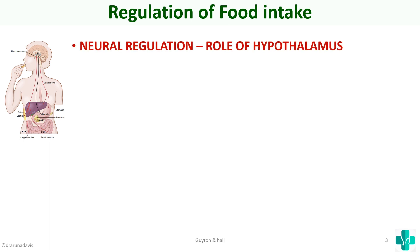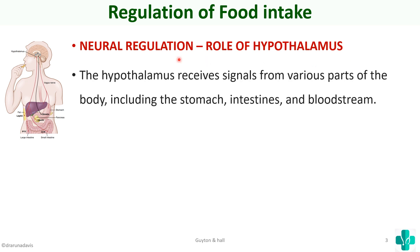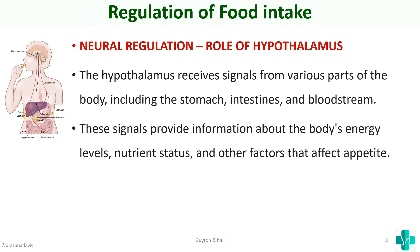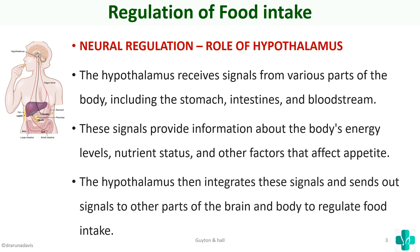The first category is neural factors — how is food intake regulated in the central nervous system? The hypothalamus is the main area which controls food intake. It receives signals from various parts of the body including the stomach, intestine, and the bloodstream. These signals provide information about the body's energy levels — how much carbohydrate and protein is present — and the hypothalamus integrates these signals and sends out signals to other parts of the brain that regulate food intake.